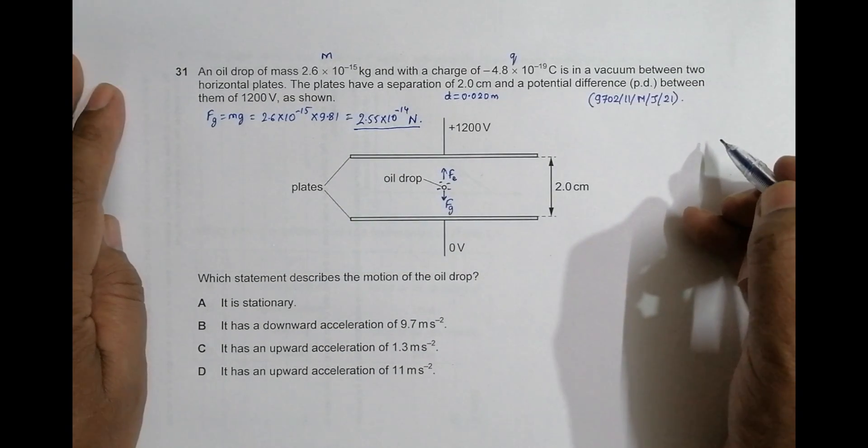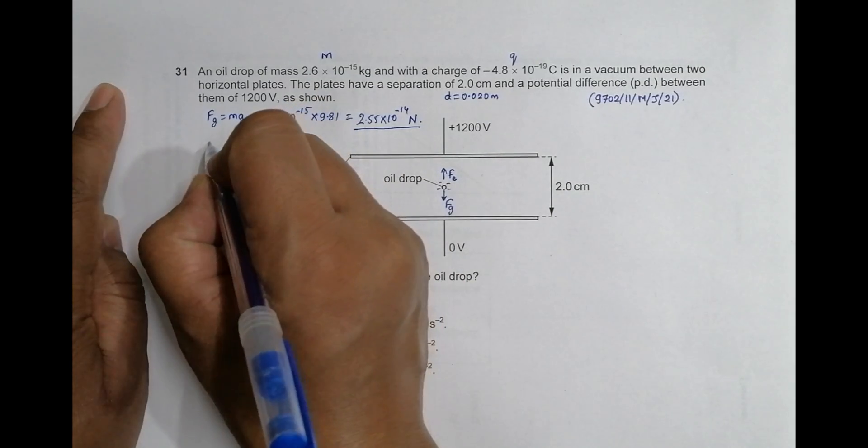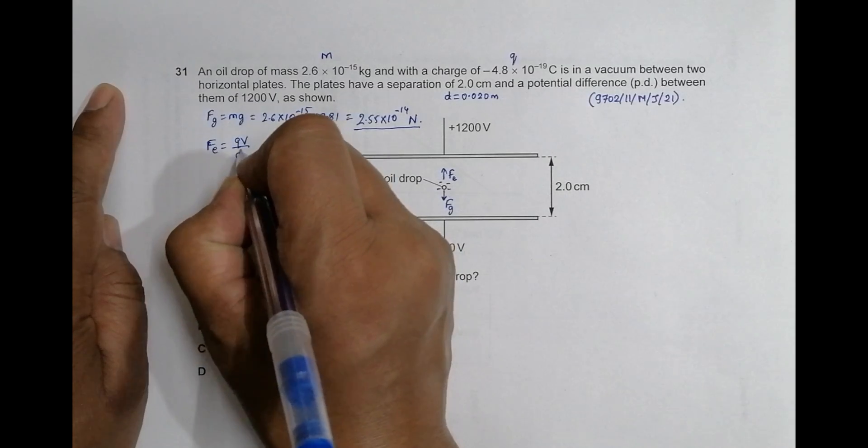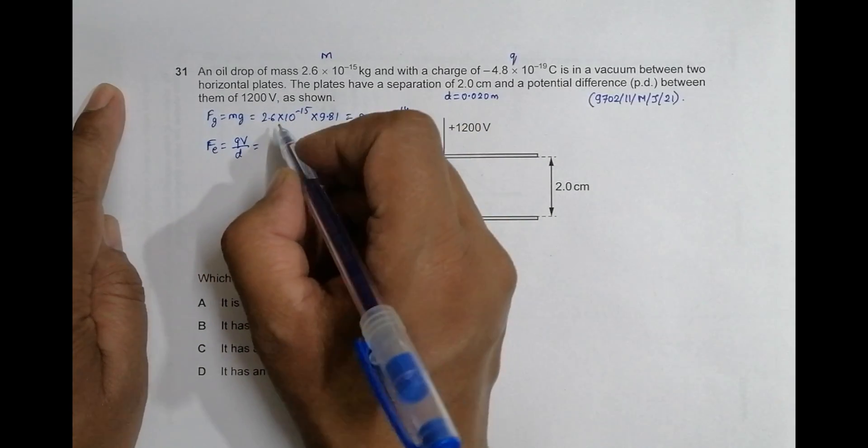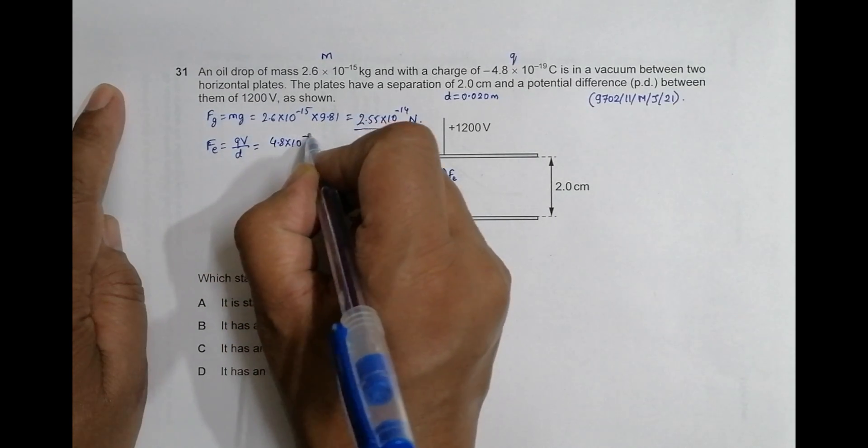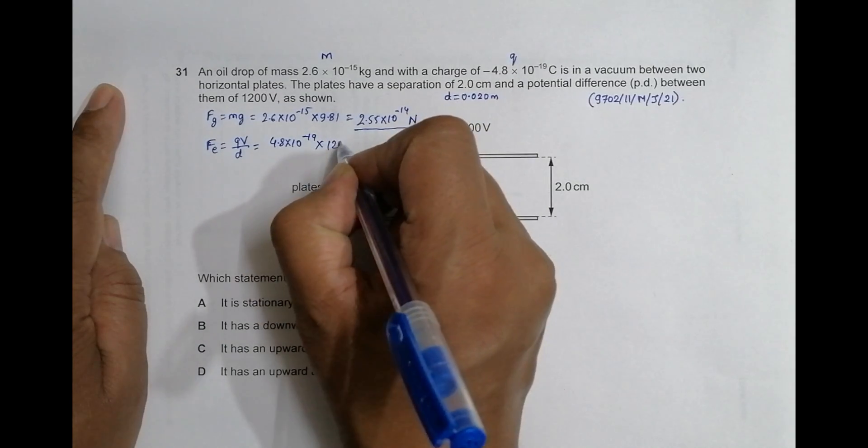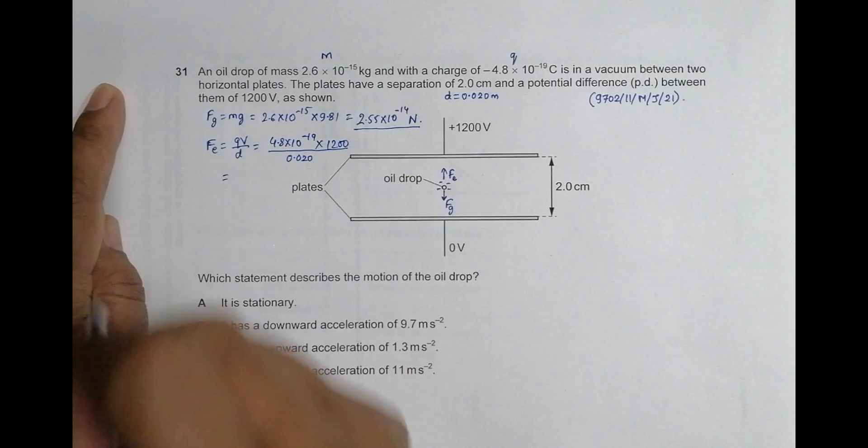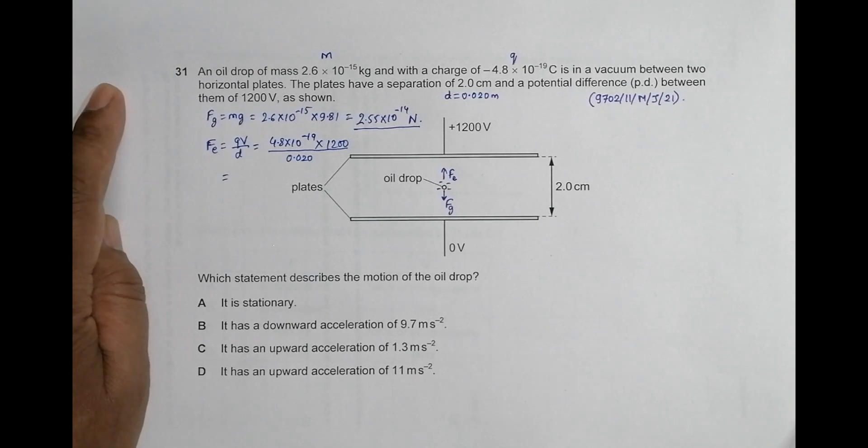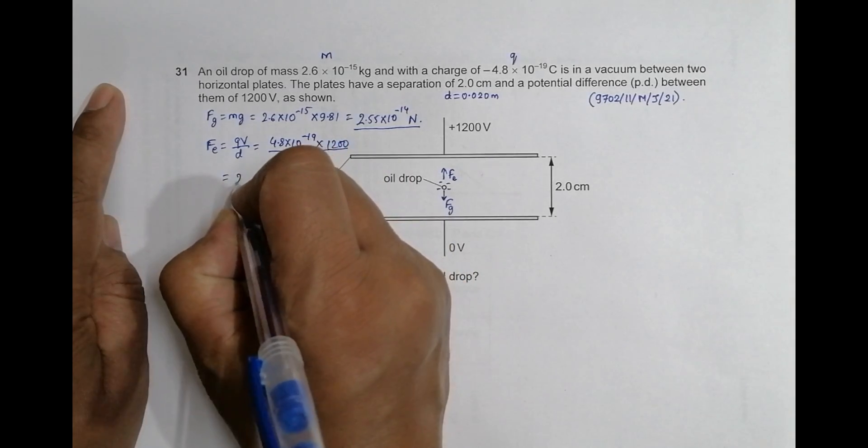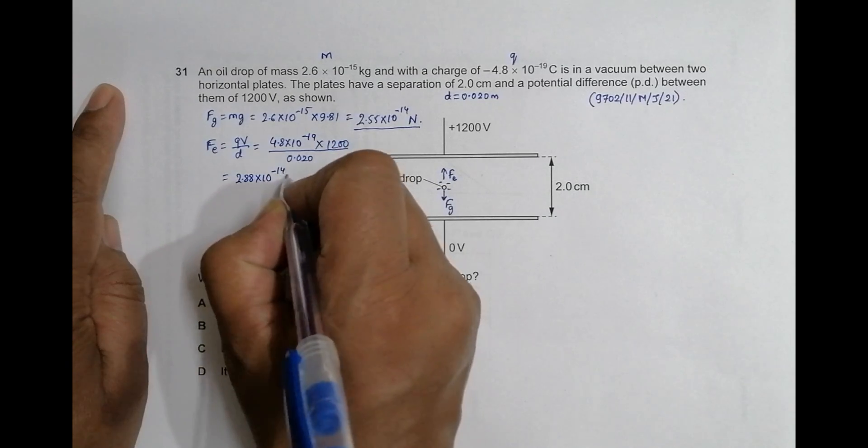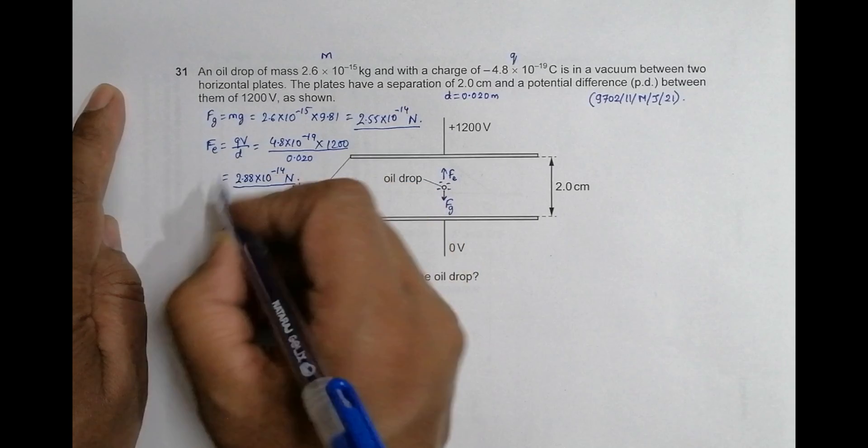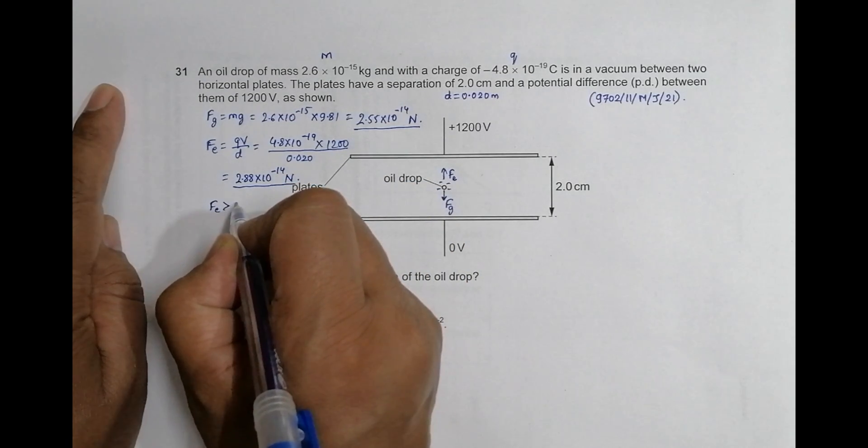Let us calculate electric force here. Electric force equals Q V by D. Let's go for the magnitude here. So Q is 4.8 × 10^-19, V is 1200, and D equals 0.020 meters. So it will be 4.8 × 10^-19 × 1200 divided by 0.02. This is equal to 2.88 × 10^-14 Newtons. So the electric force is more than the gravitational force.